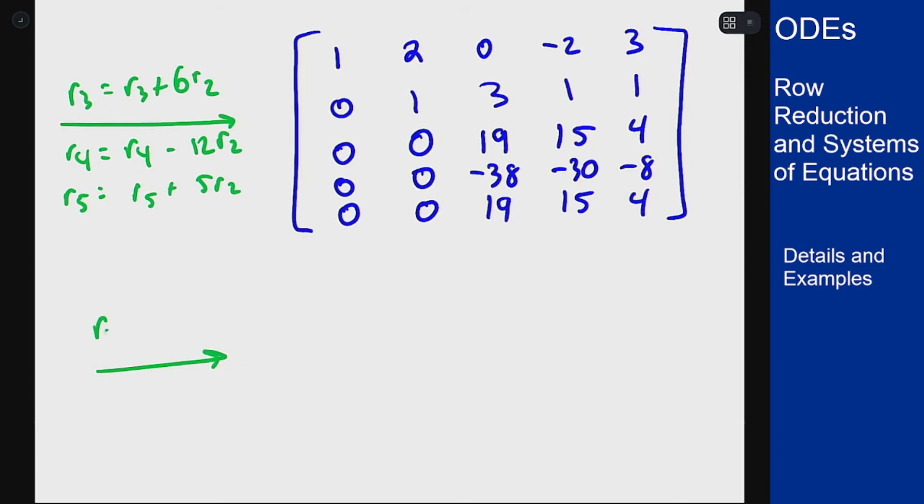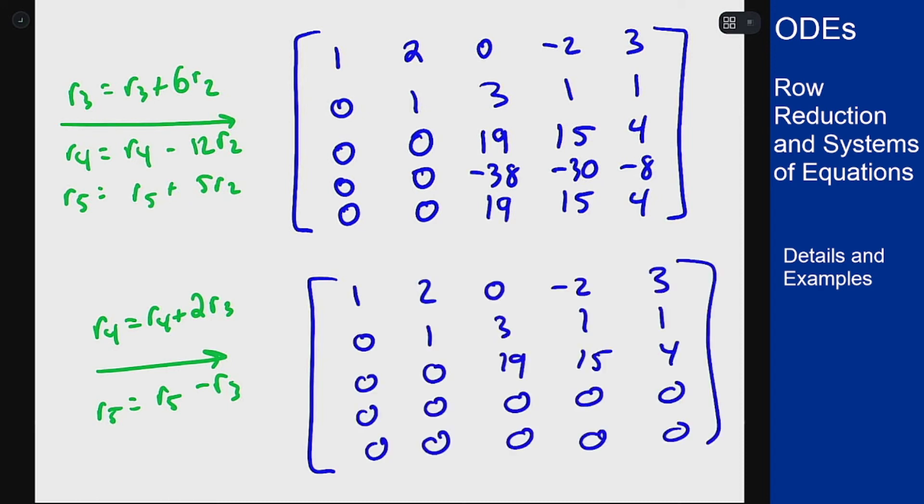by doing row 4 is row 4 plus twice row 3, and row 5 is row 5 minus row 3, to give me all zeros in those bottom two rows. And now this here tells me all I need to know.